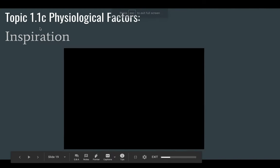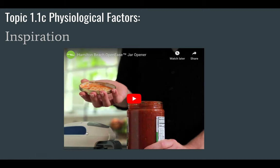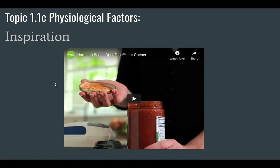Today we're looking at topic 1.1c, physiological factors. Here's a little inspiration you can watch — this is a jar opener, a mechanical device that will actually open up a jar. Have a look at this video and it'll give you a good idea of some of the things that we need to consider as designers.